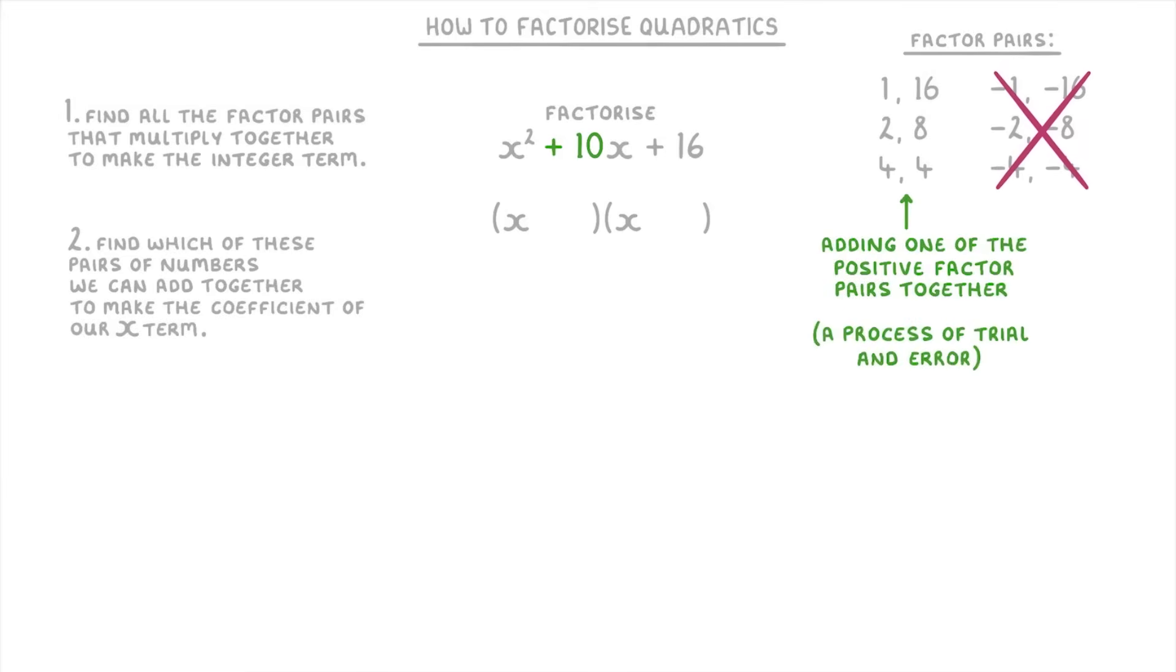Next it's just a process of trial and error to see which pair works. 1 plus 16 is 17, not 10, so we can cross that one out. 2 plus 8 is 10 though, so that's probably the one that we need. But just to double check we should try the last one: 4 plus 4 which is 8, so that's not correct and we can cross that one out.